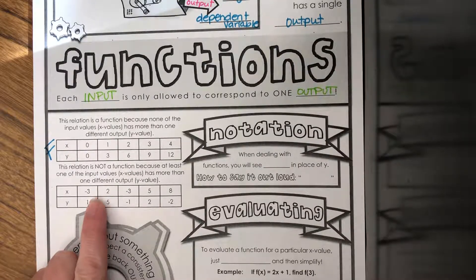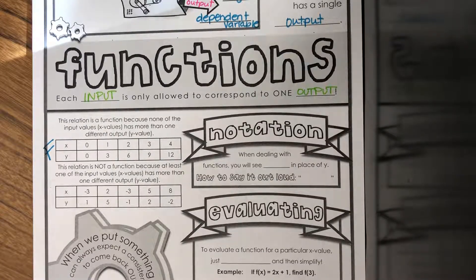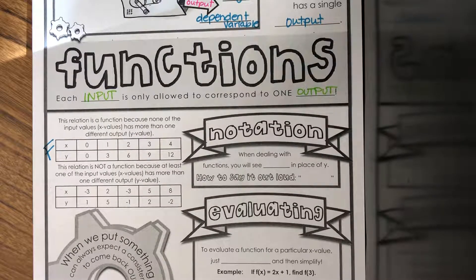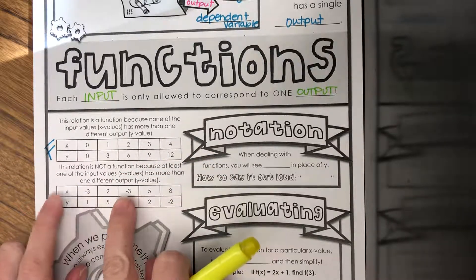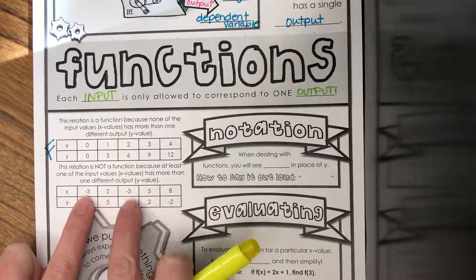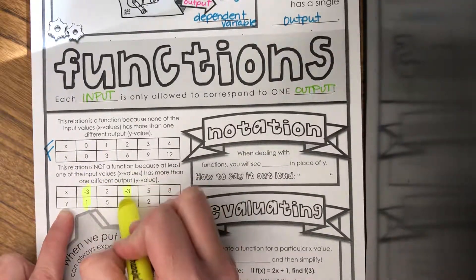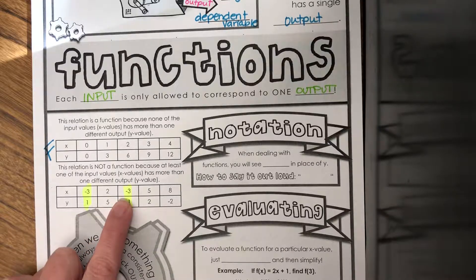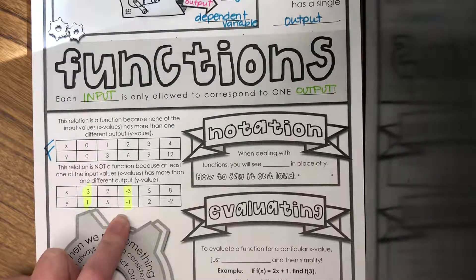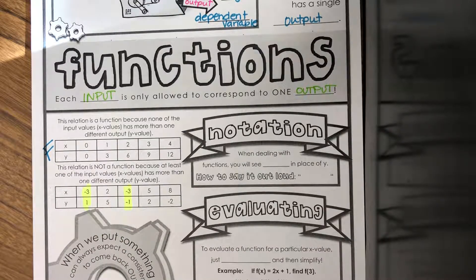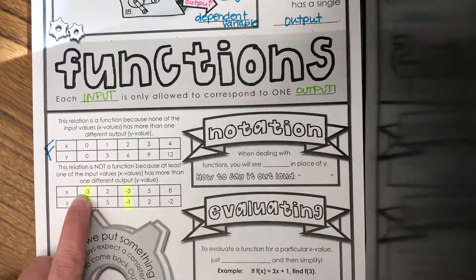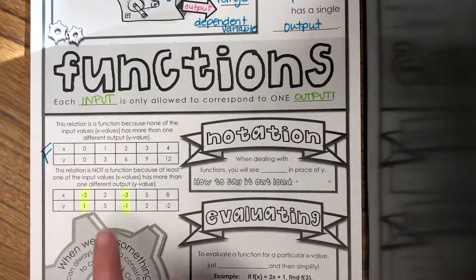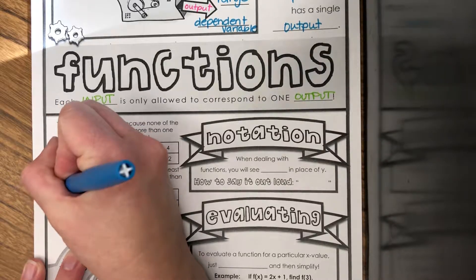But look at this second one. Every input can only have one output, but the easy trick way to remember is do not repeat your x's. And here's my X value and it's being repeated. The first time I put in a negative three, I got out a one. The second time I put in a negative three, I got out a negative one. That's not good. They should have had the same output. The input of negative three should only have one output to be a function, so this one would be not a function.